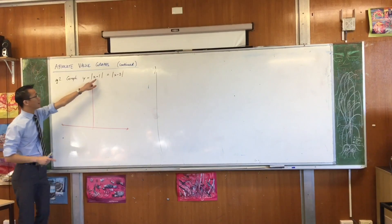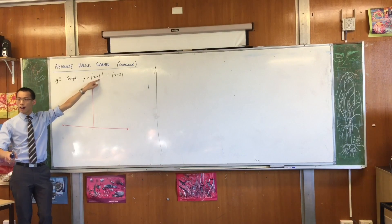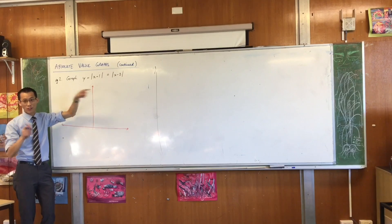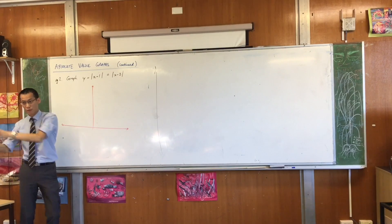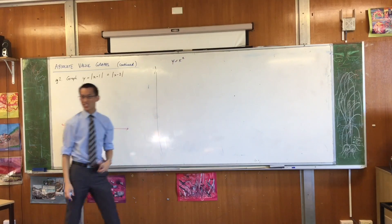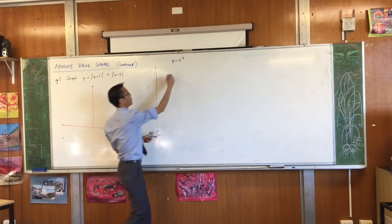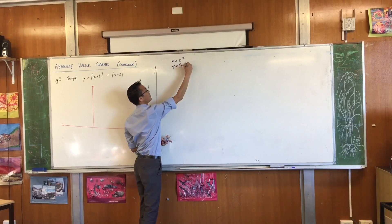What does the plus 1 do? I'm going to take advantage of something you've actually known for a long time back from graphing parabolas. Do you remember, everyone knows what x squared looks like. Everyone has a good idea of what that shape is in their mind. Now, what's the difference between that shape and x plus 1 squared?